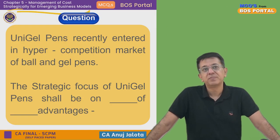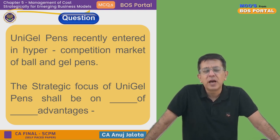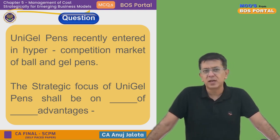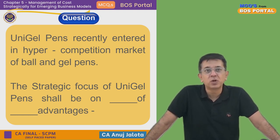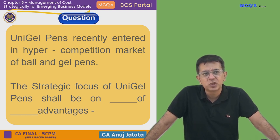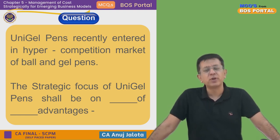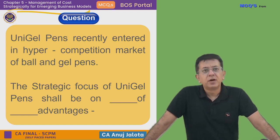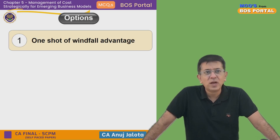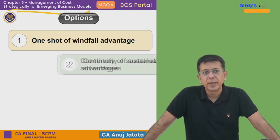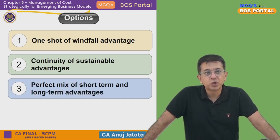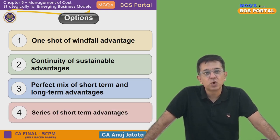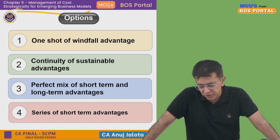Let's start today's question. Unigel Pens entered into a hyper-competition market. Pen, in any case, is quite a competitive market — we all know that with ball and gel pens. The strategic focus of Unigel Pens should be on dash of dash advantages. You have to fill in two blanks. The four options are: one shot of windfall advantage; continuity of sustainable advantages; perfect mix of short-term and long-term advantages; and series of short-term advantages.